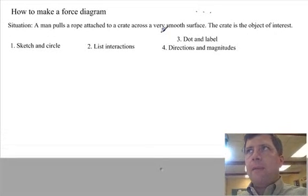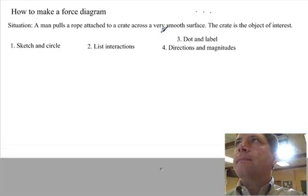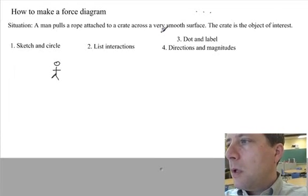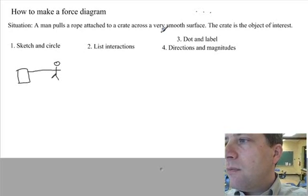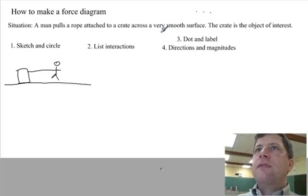Here's the four steps of a force diagram. It's simple. Sketch this situation: A man pulls a crate attached to a rope across a very smooth surface. That's a good enough sketch.